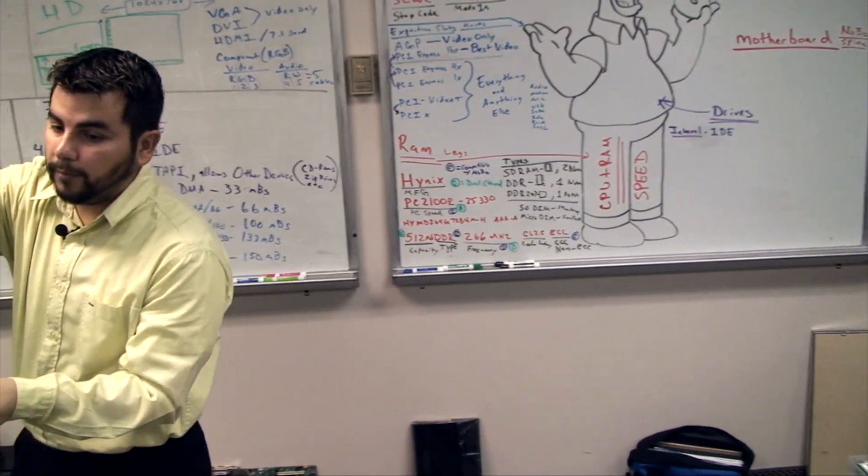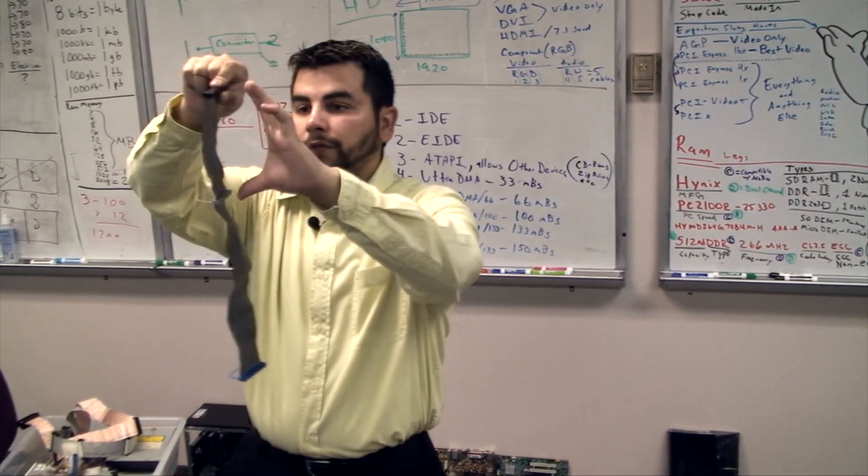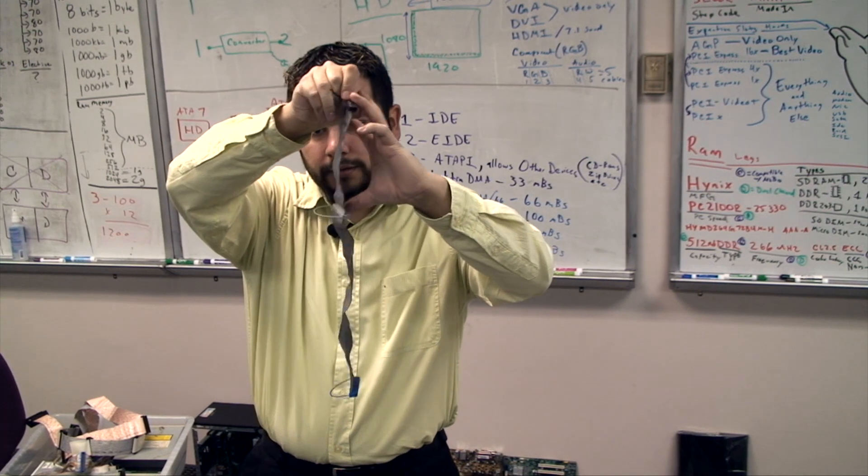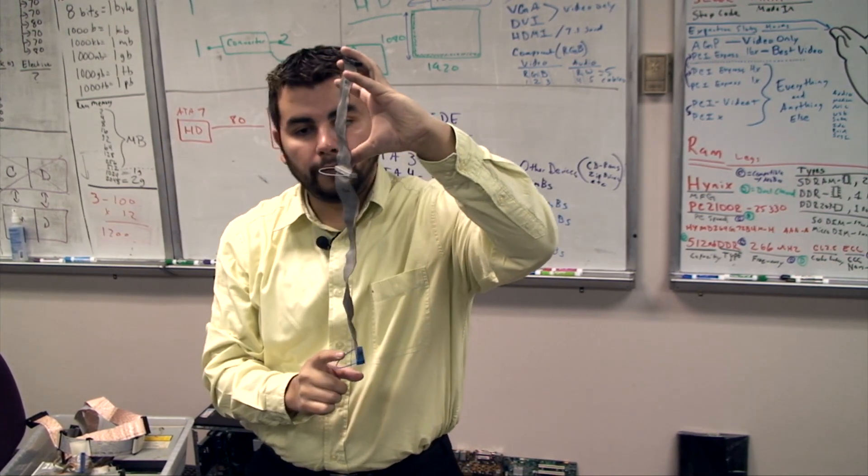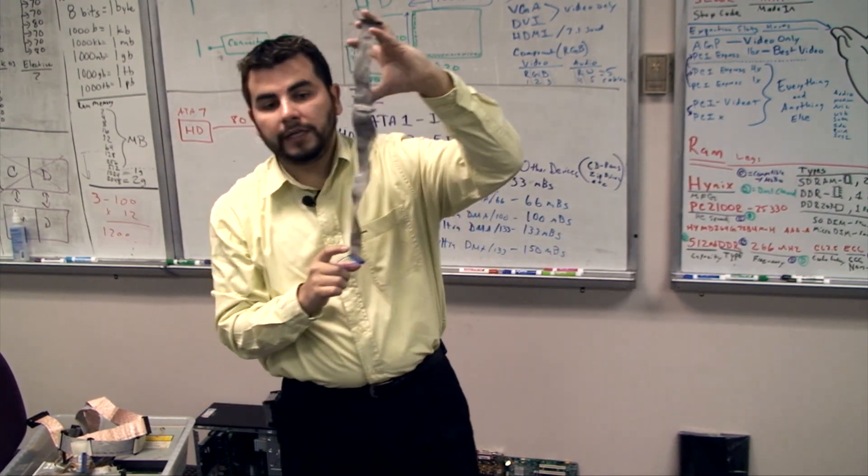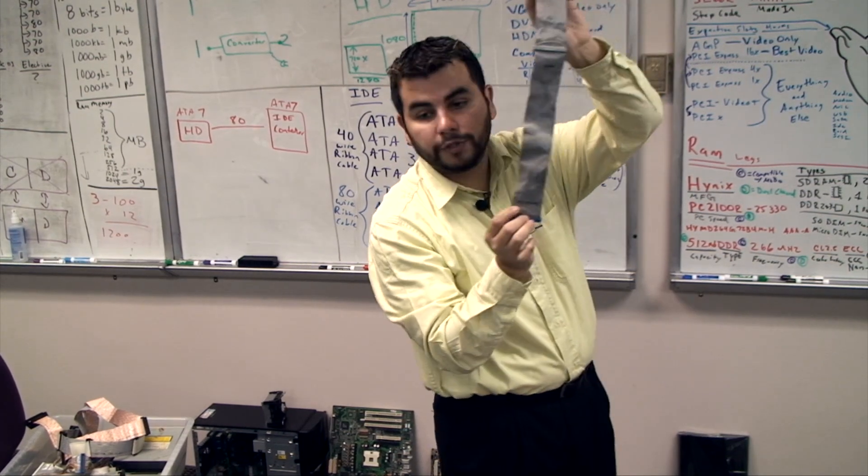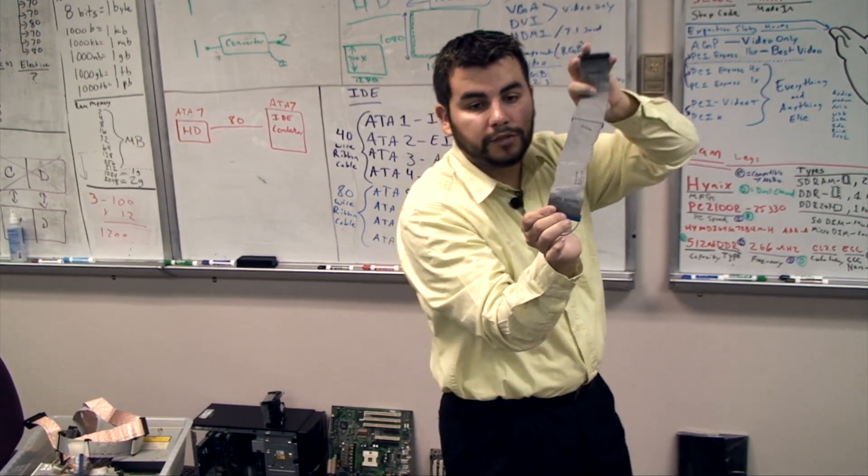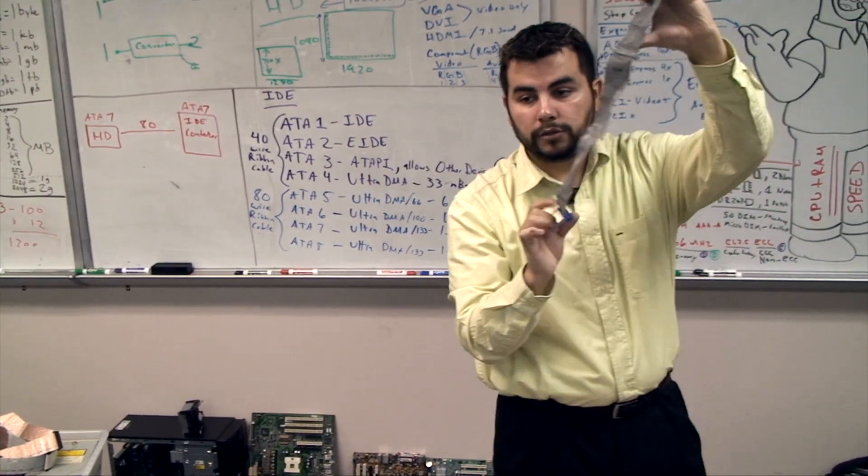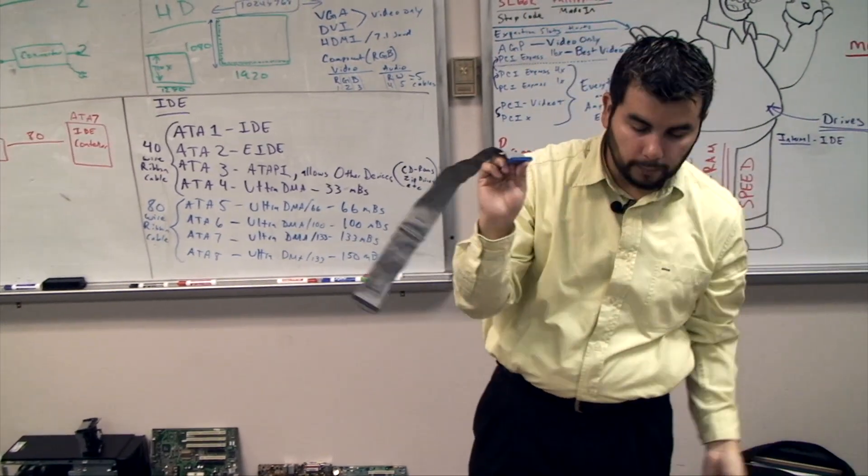There should be three connections on your cable. Two of them should be real close to each other and one of them will be real far away. The one that's furthest away is for your CPU board, also known as your motherboard.